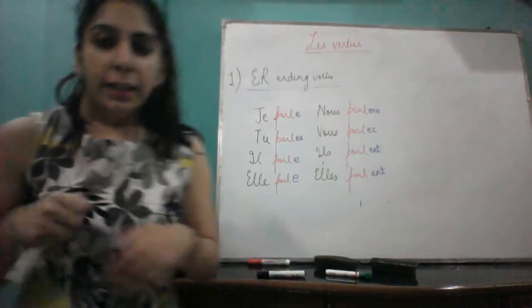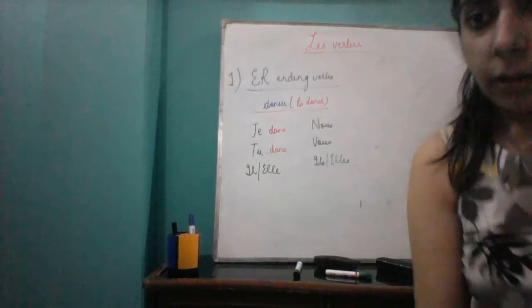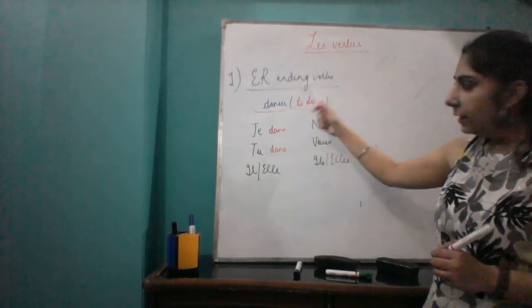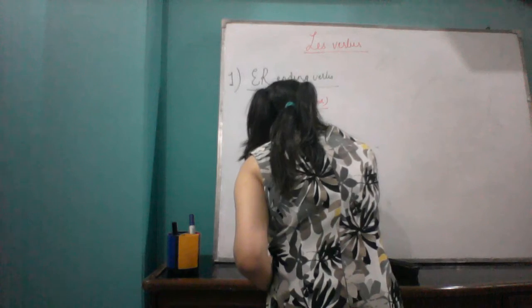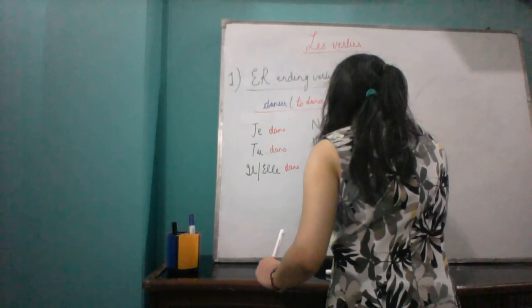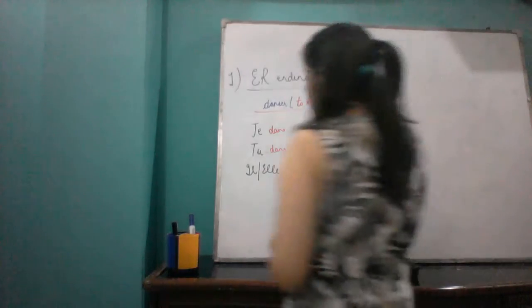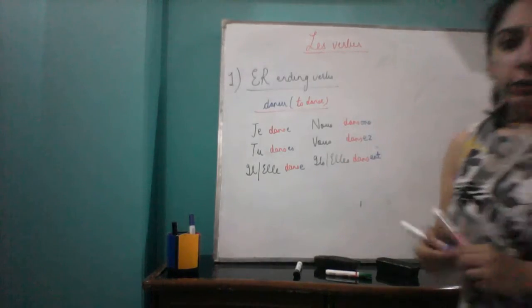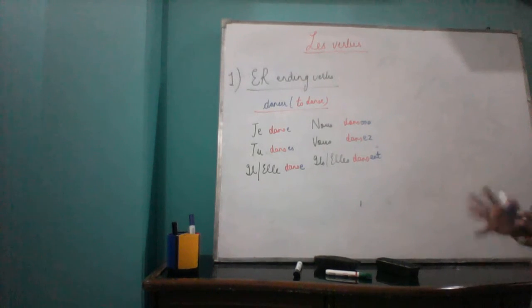Now let's see one more verb, and then we will work on the exceptions of ER ending verbs. I have taken the verb 'danser' — D-A-N-S-E-R — which means 'to dance'. The stem is 'dans' because ER is removed. So: je danse, tu danses, il/elle danse, nous dansons, vous dansez, ils/elles dansent.